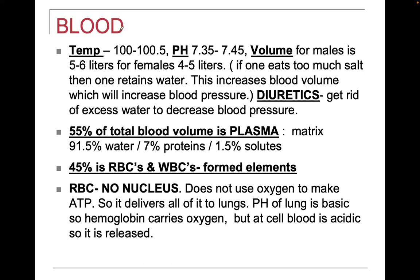When we look at blood, blood has a temperature of about 100 to 100.5 degrees. The pH of blood is somewhere between 7.35 and 7.45, which averages out to about 7.4 — slightly alkaline, just a little bit.